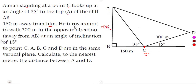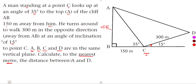He then turns around to walk 300 meters in the opposite direction, away from AB, at an angle of inclination of 15 degrees from the horizontal. A, B, C, and D are in the same vertical plane. Calculate, to the nearest meter, the distance between A and D.